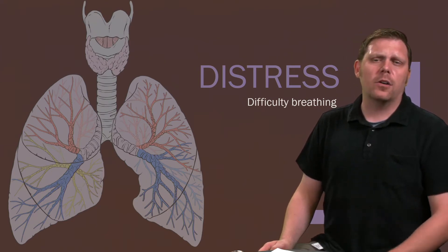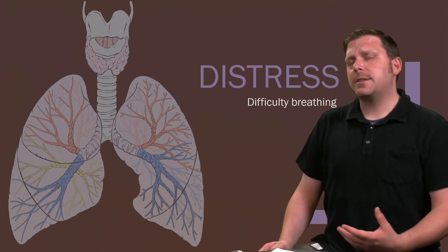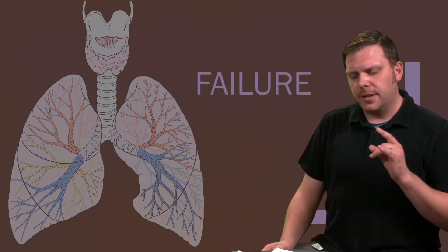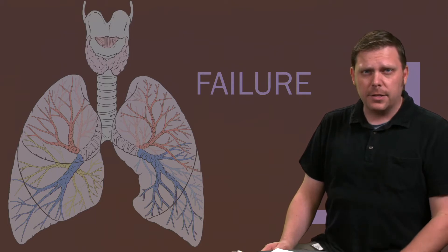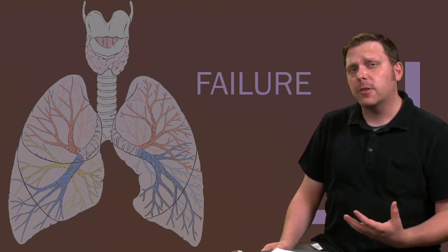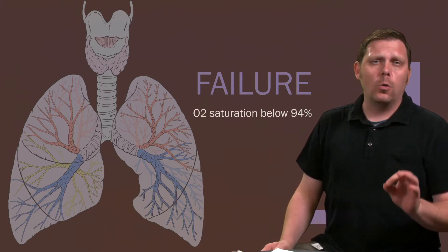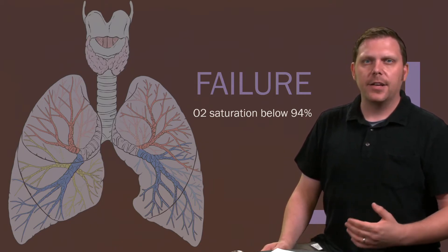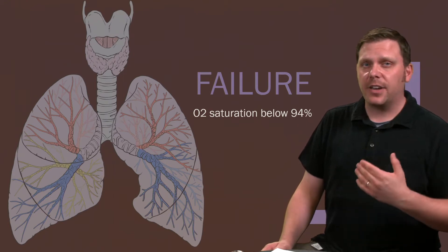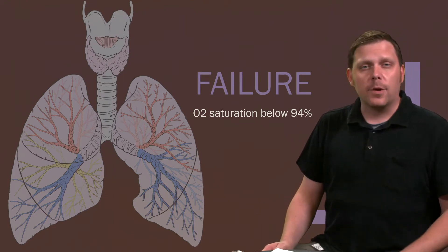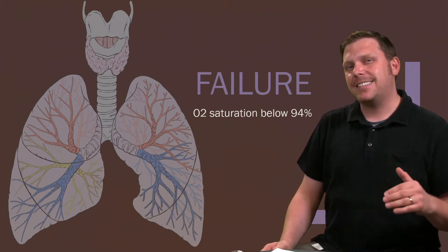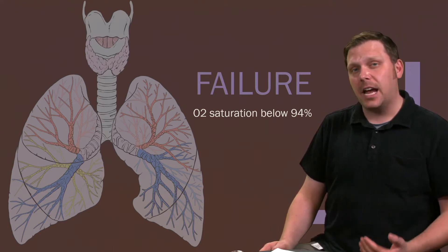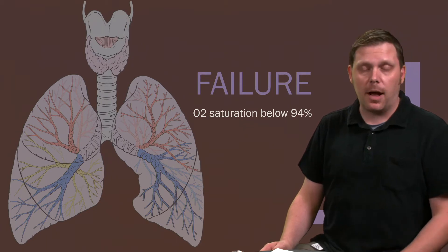If all patients who are having difficulty breathing are in distress, when does it become failure? Respiratory failure is defined in two ways by American Heart Association. The first one is that your O2 saturations remain below 94% despite oxygenation. So I've administered oxygen via nasal cannula, via non-rebreather mask, and despite that they still are below 94%, they are now in respiratory failure and we need to start taking care of it to fix whatever the problem is.